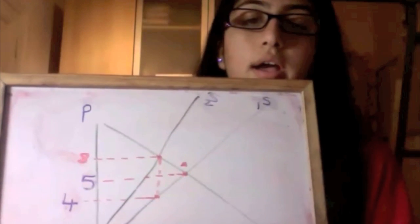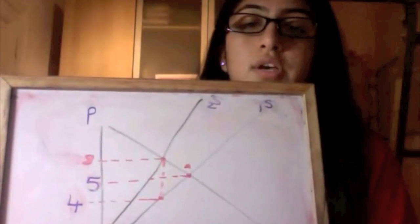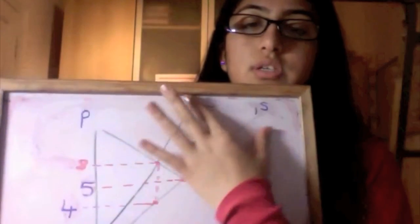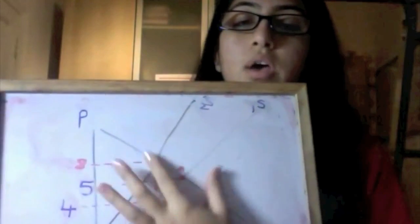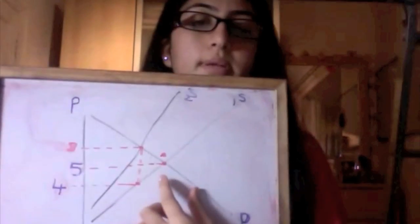Then as the price increases, the tax becomes greater. So the two lines are not parallel. They actually start to diverge. They move straight away from each other. And let's see what happens.